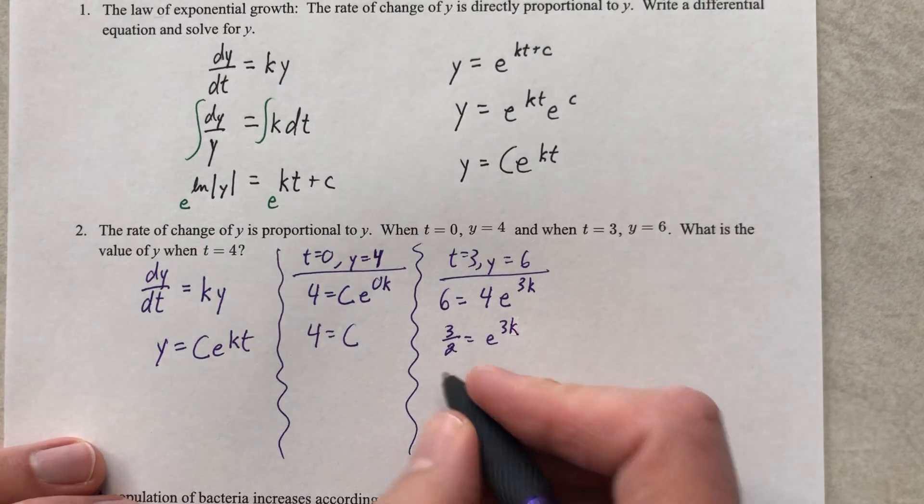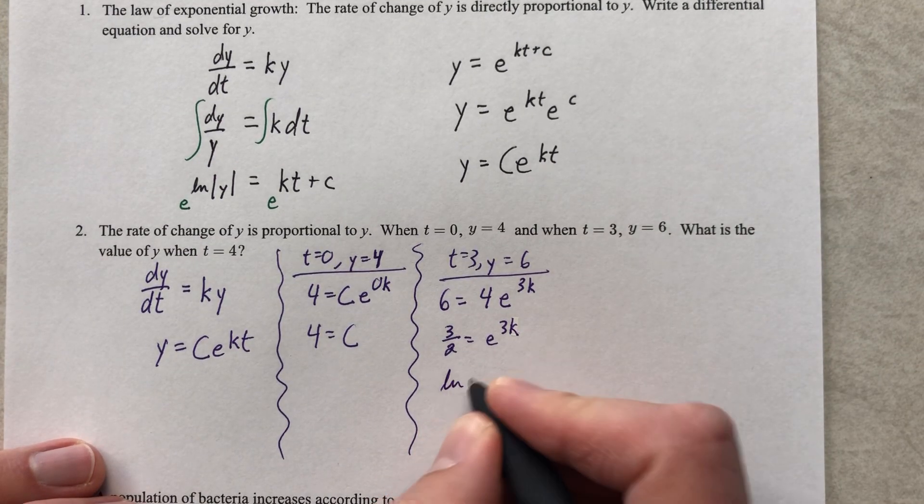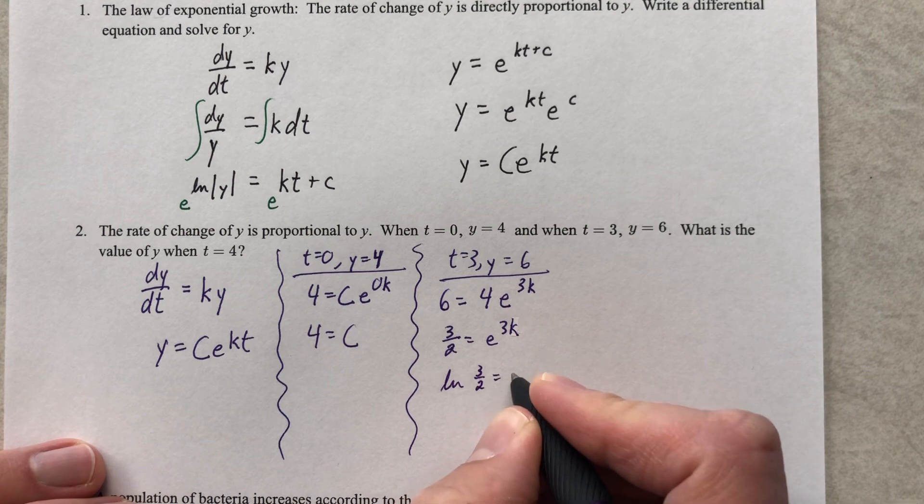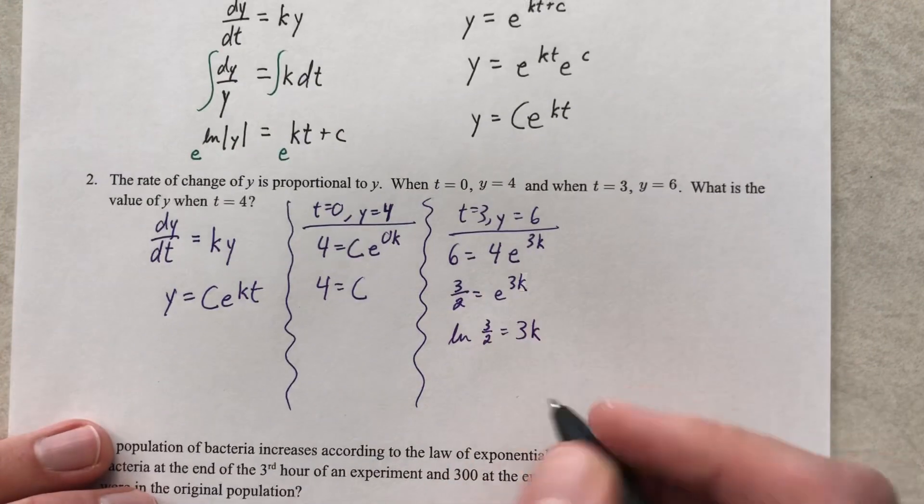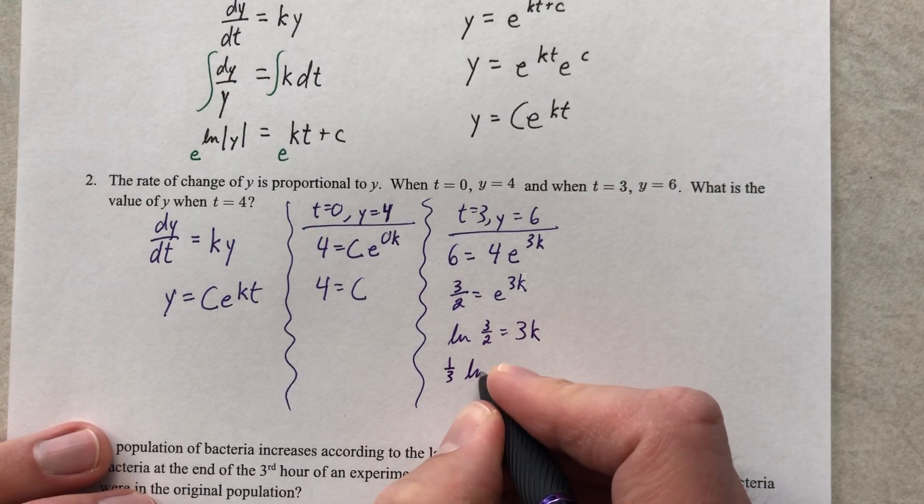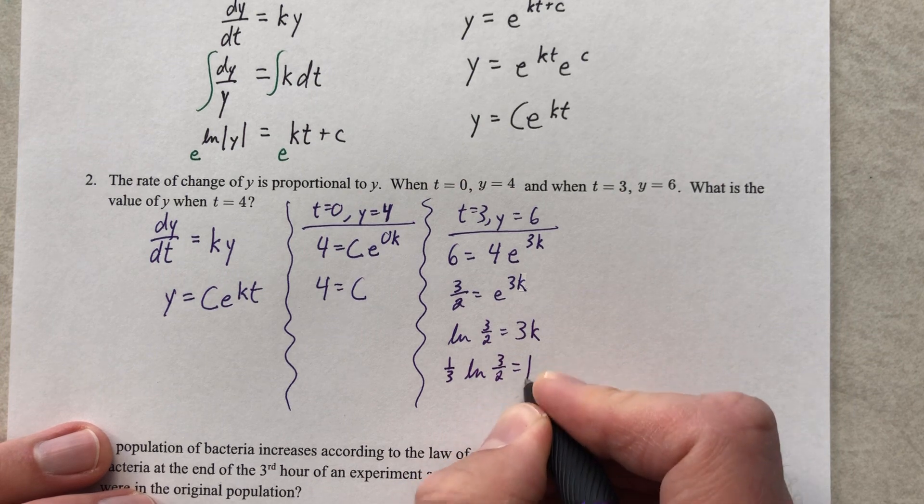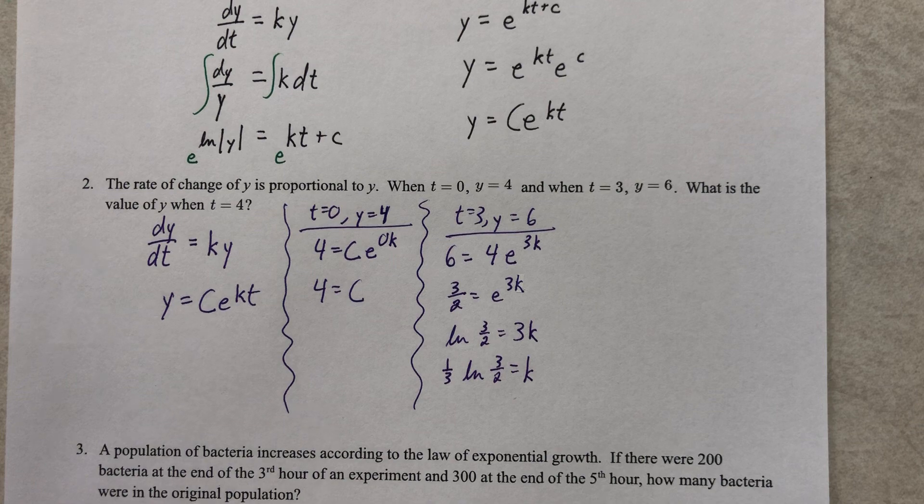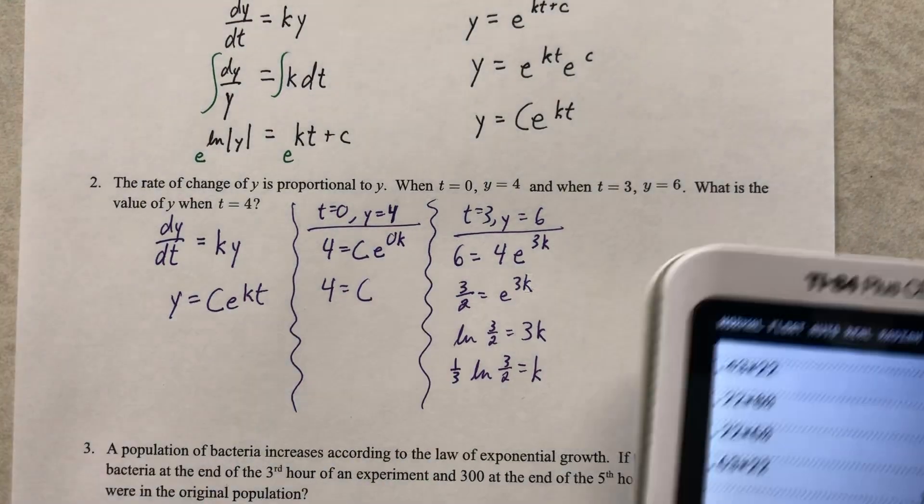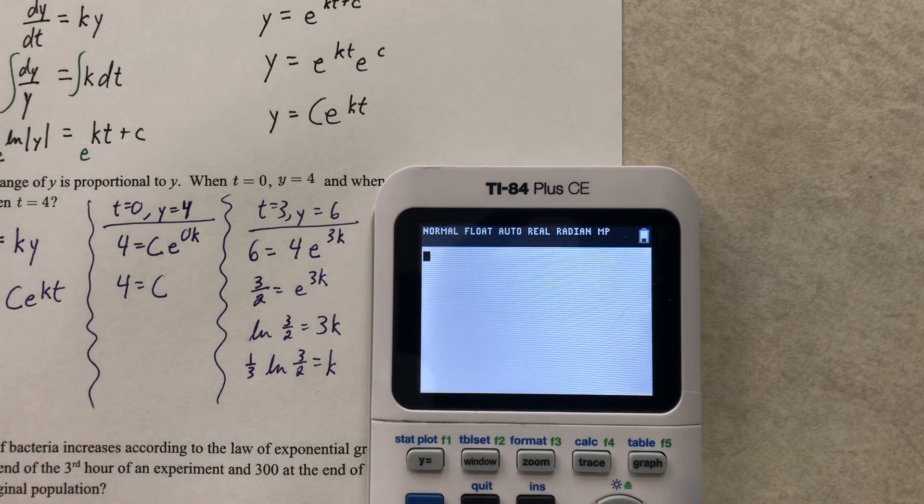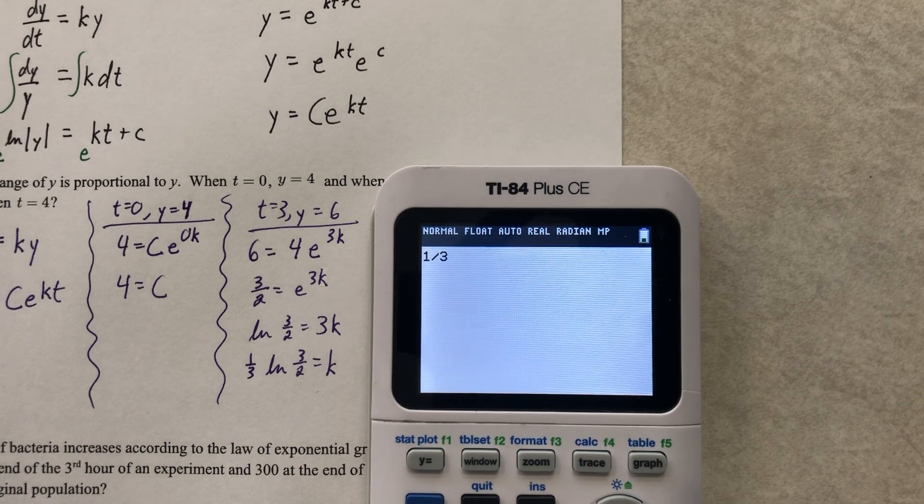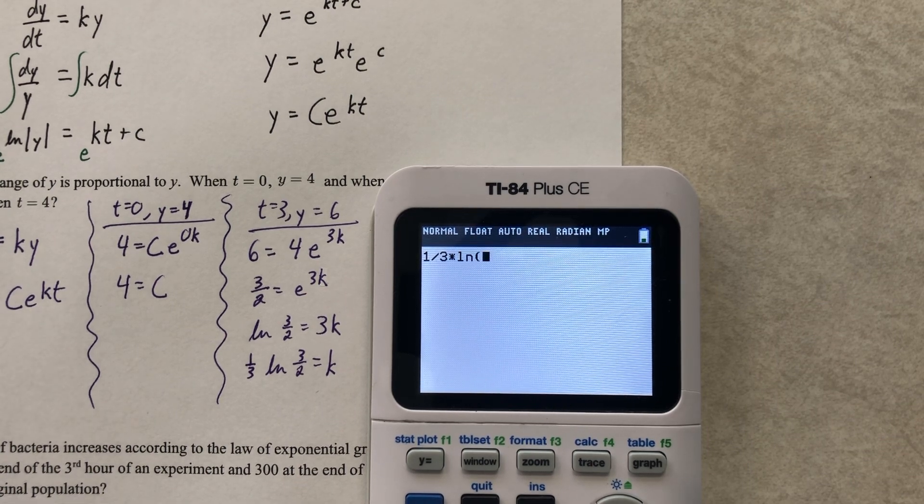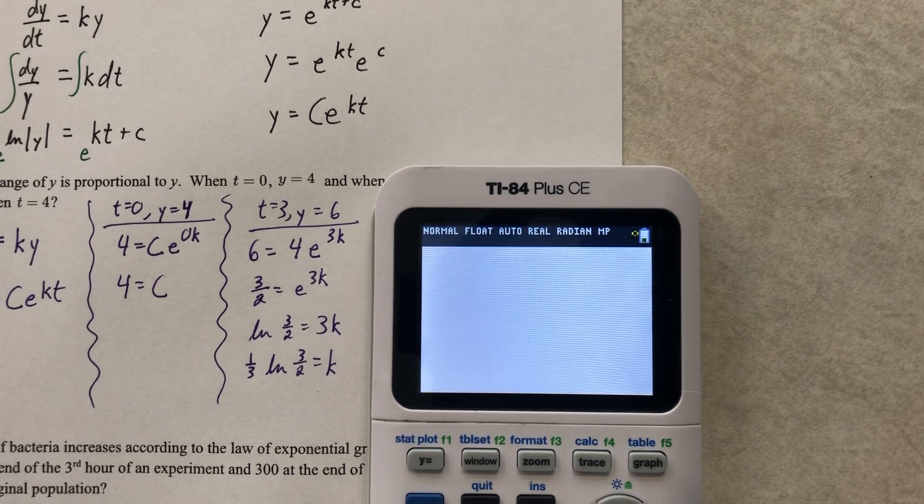We'll divide by four. That gives us six-fourths, that's three halves, equals e to the three k. We're going to take the log of both sides. So natural log of three halves equals three k. Then we'll divide by three. So one-third natural log of three halves is equal to k. I got this.